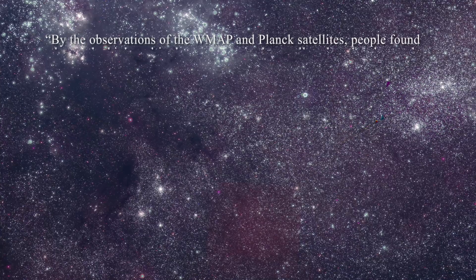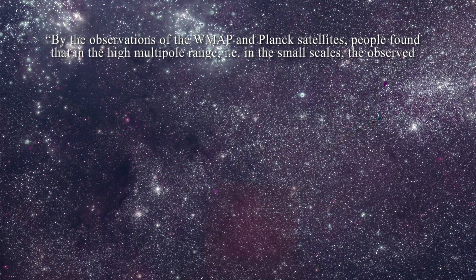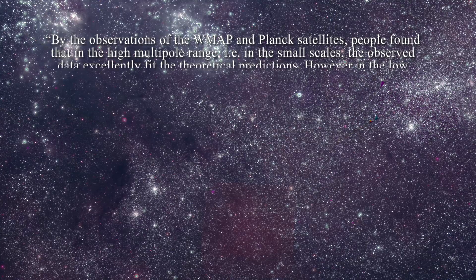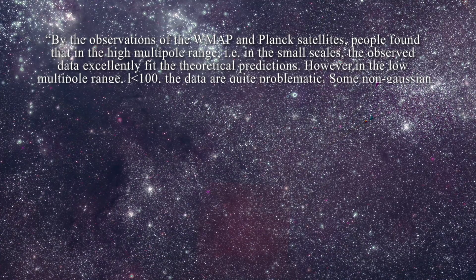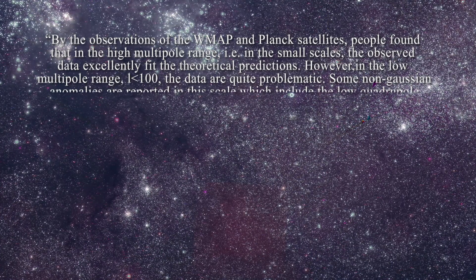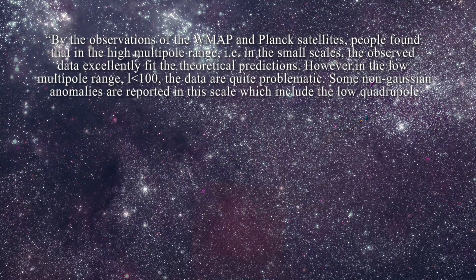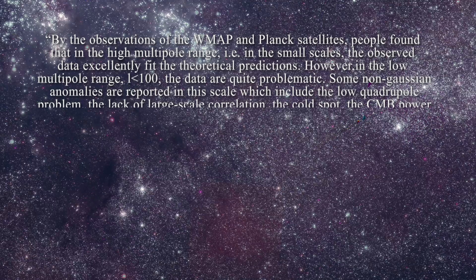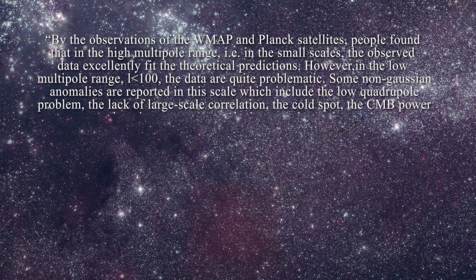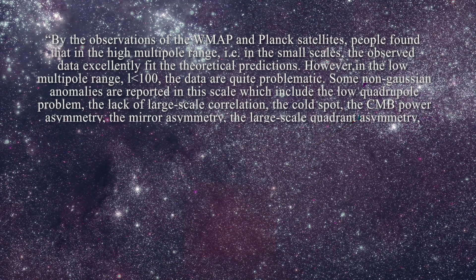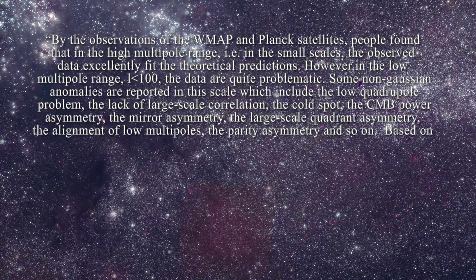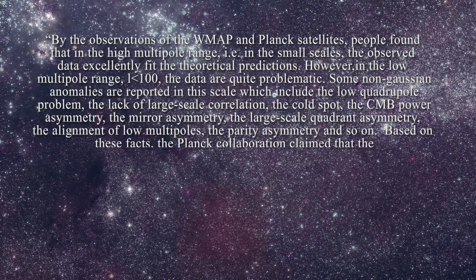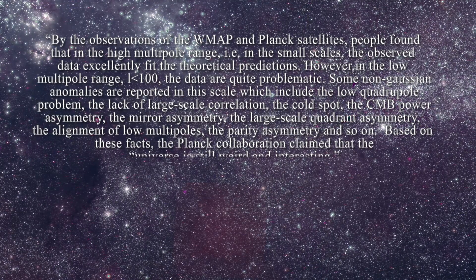Here is a quote from Zhao and Santos' perspective. By the observations of the WMAP and Planck satellites, people found that in the high multipole range — i.e., in the small scales — the observed data excellently fit the theoretical predictions. However, in the low multipole range, L less than 100, the data are quite problematic. Some non-Gaussian anomalies are reported in this scale, which include the low quadrupole problem, the lack of large-scale correlation, the cold spot, the CMB power asymmetry, the mirror asymmetry, the large-scale quadrant asymmetry, the alignment of low multiples, the parity asymmetry, and so on.